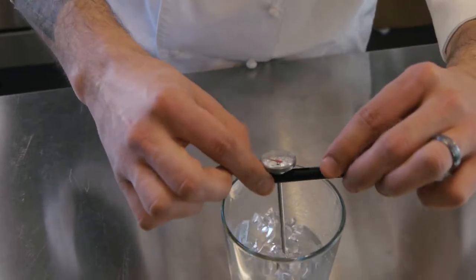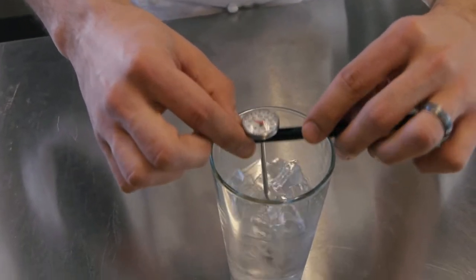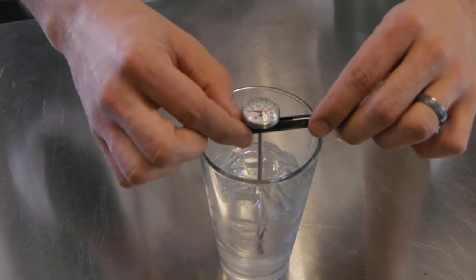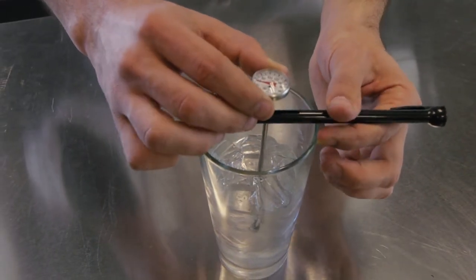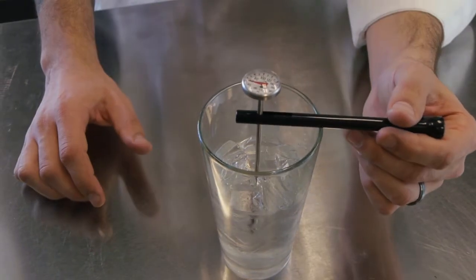Try and get it so that way it sits in the center, doesn't come in any contact with the glass. Go down to the bottom and come up just a little bit. The nice thing about these thermometers is you can hang it on the end right there.